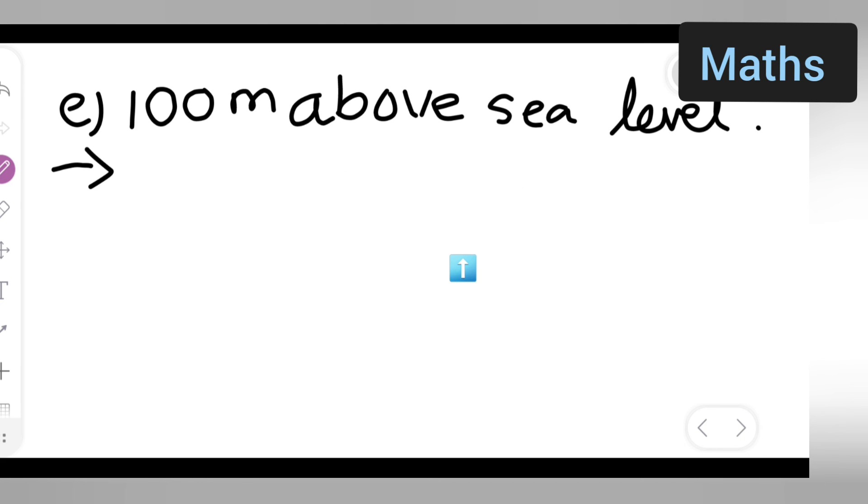Next, moving towards the E one. What is the E one? 100 m above sea level. Opposite of 100 m above sea level is nothing but 100 m below sea level. Write down 100 m below sea level.